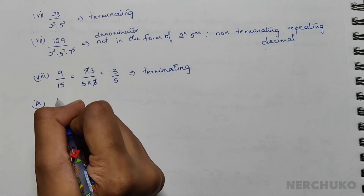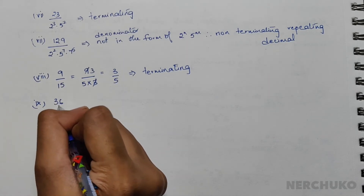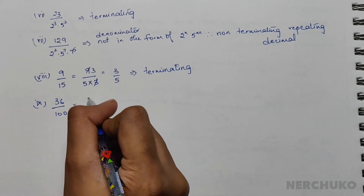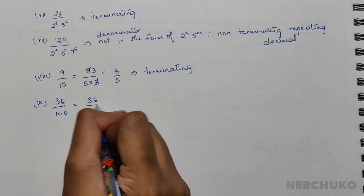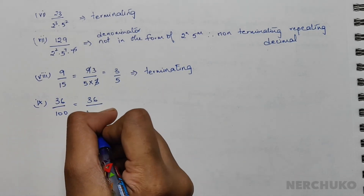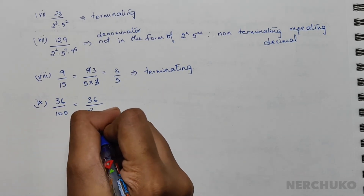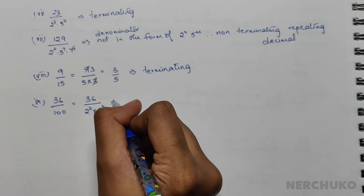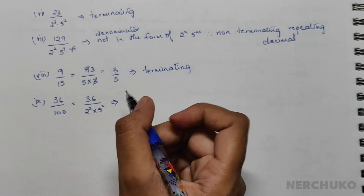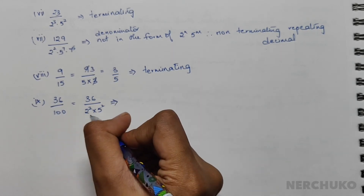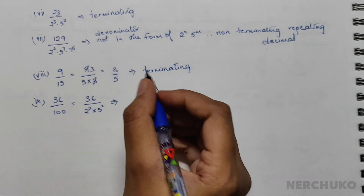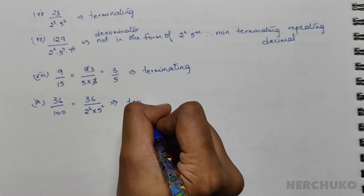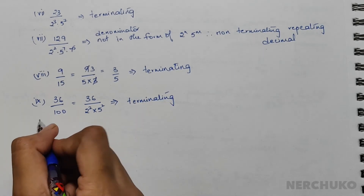For the next bit, we have 36 divided by 100. 100 can be written as 2 squared × 5 squared. Since the denominator is in the form of 2^n × 5^n, we can write it as a terminating decimal.